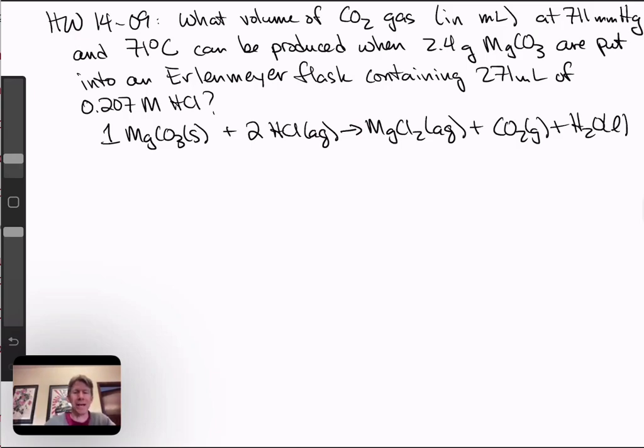What volume of CO2 gas in milliliters at 711 millimeters of mercury and 71 degrees Celsius can be produced when 2.4 grams magnesium carbonate are put into an Erlenmeyer flask containing 271 milliliters of 0.207 molar HCl?